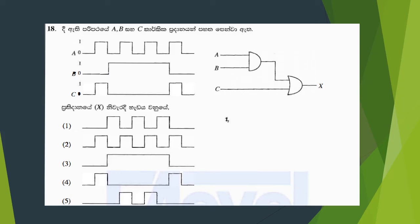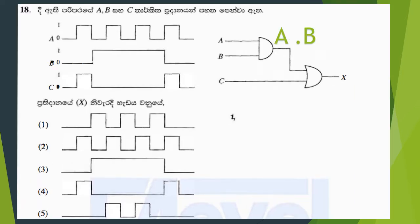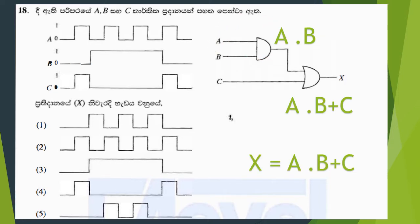This is the 10th paper of MCQ. Let's take a look at this logic circuit. This is the N gate. This is the O gate. The N gate output is A dot B. Let's take a look at the N gate output A dot B dot C.